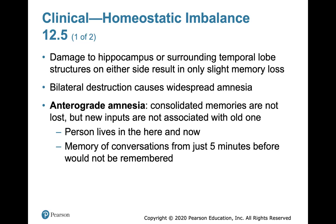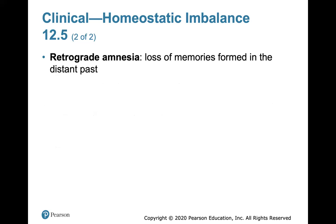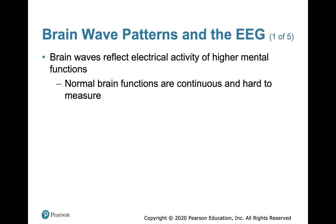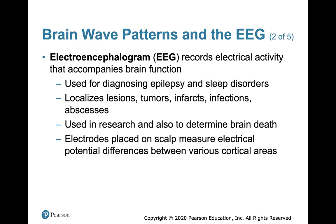Pretty sure my dad has that. Retrograde amnesia is the loss of memories formed in the distant past. Brain waves reflect electrical activity of higher mental functions, and normal brain functions are continuous and really hard to measure. We measure electrical activity that accompanies brain function with the electroencephalogram, or EEG. This is used for diagnosing epilepsy, seizures, sleep disorders, and it's helpful to localize where a lesion, tumor, infarct, infection, or abscess is. It's also used in research and to determine brain death.